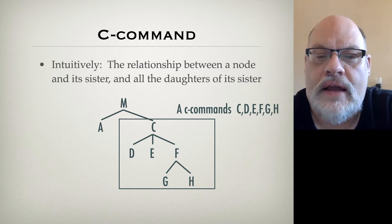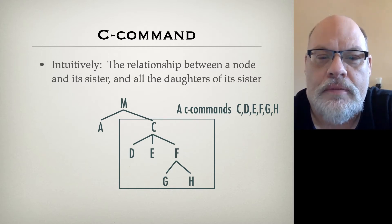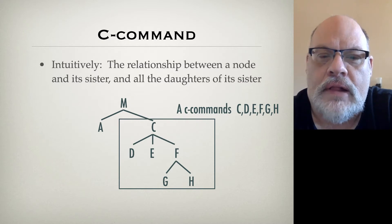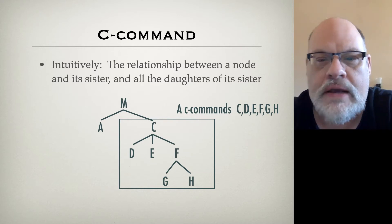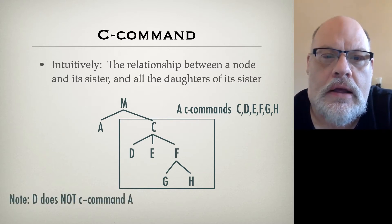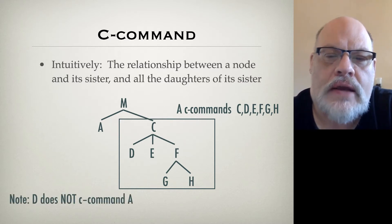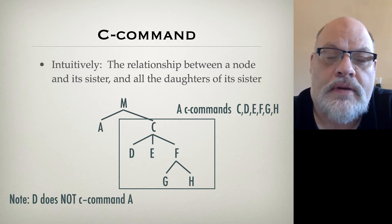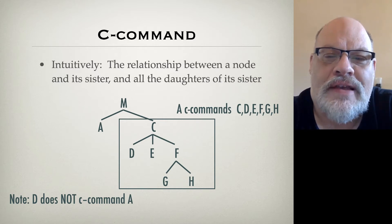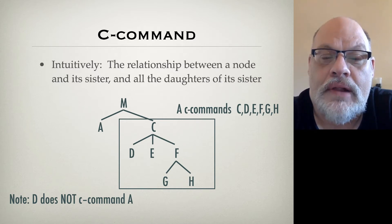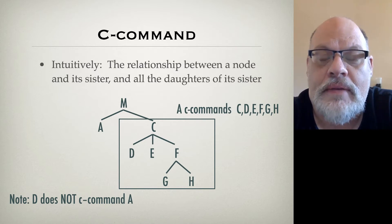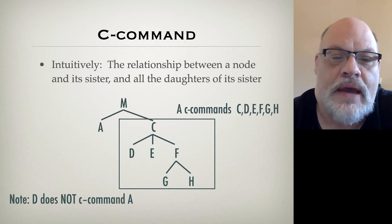So A C-commands all of those nodes. This is, again, a structural prominence relationship. A is more prominent than all those things, but it doesn't rely upon being on top of them in the tree. Note that just because one node C-commands another doesn't mean that they C-command each other. So A C-commands D, but D does not C-command A.